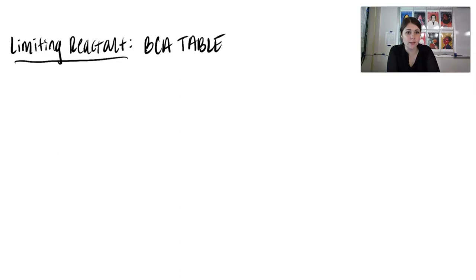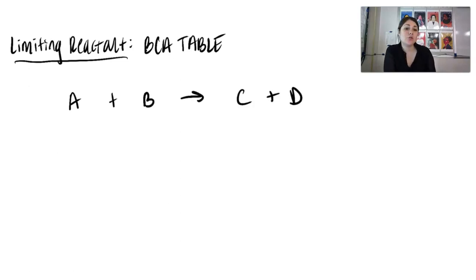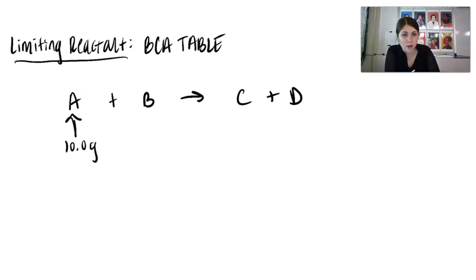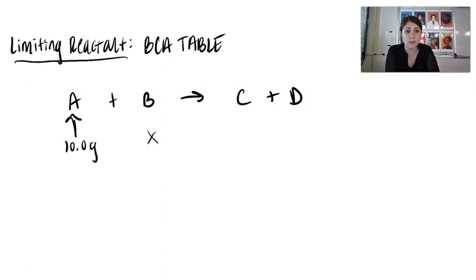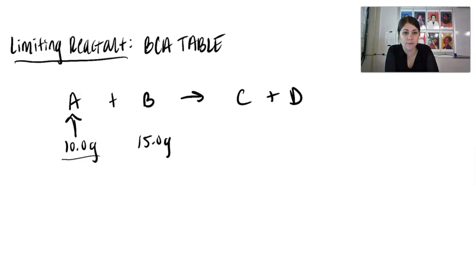The difference between stoichiometry and limiting reactant is: in stoichiometry, if we're given this equation, we're given just one of the reactants' information — say, 10 grams. In a limiting reactant problem, you're going to be given both reactants' information. Before, we just ignored what B was and did stoichiometry based off one reactant. But if you are given both reactant information, this makes the problem more difficult. You'll be approaching a limiting reactant problem when you're given information on both reactants.